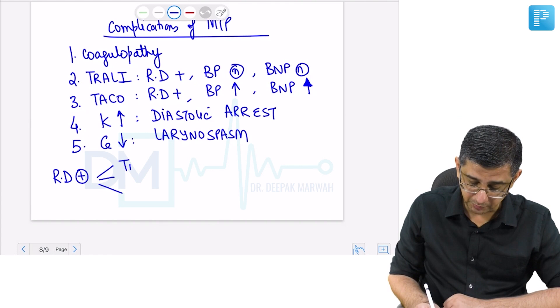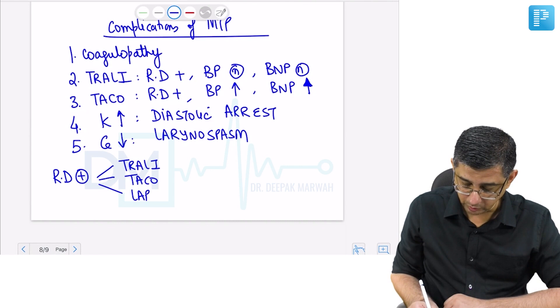For respiratory distress, there can be three possibilities. The respiratory distress could be due to TRALI, TACO, or laryngospasm that will trigger difficulty in breathing.